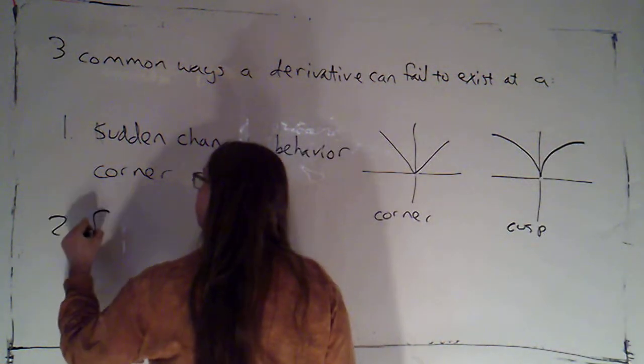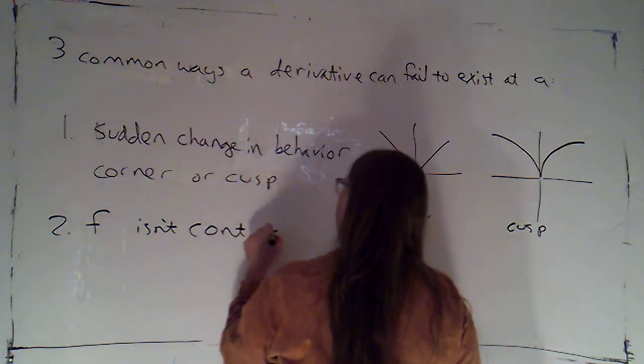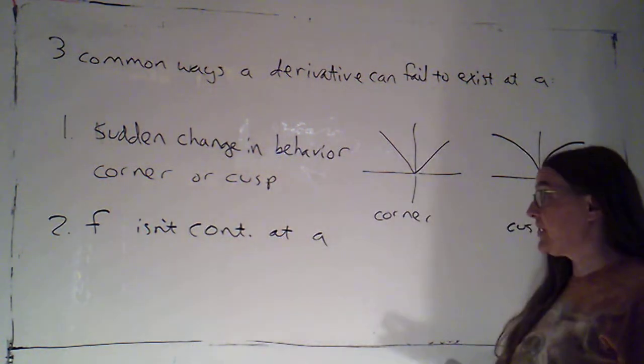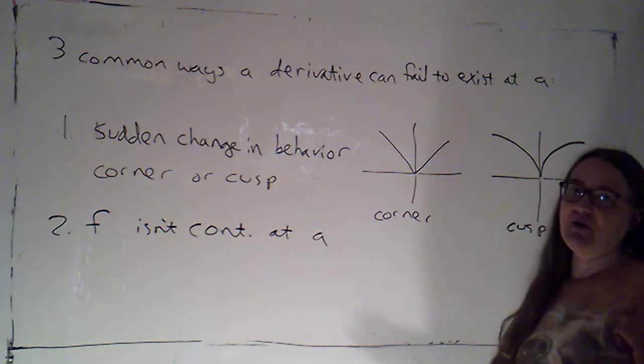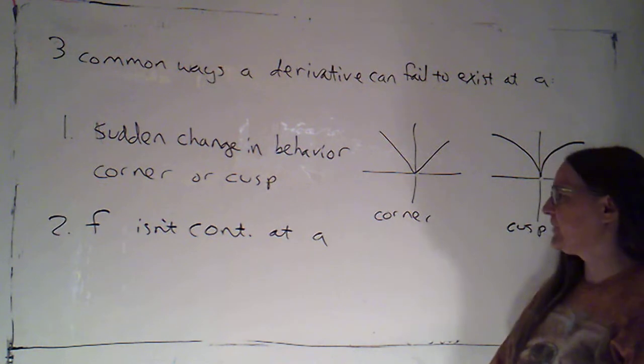Another thing that can happen is that the function isn't continuous at a. In the last video, we saw a theorem that if a function is differentiable, it's got to be continuous. That means if it's not continuous, there's no way it can possibly be differentiable.